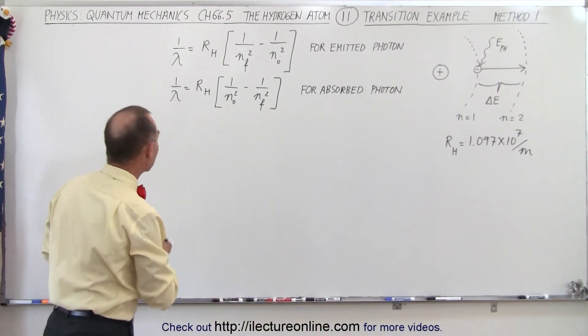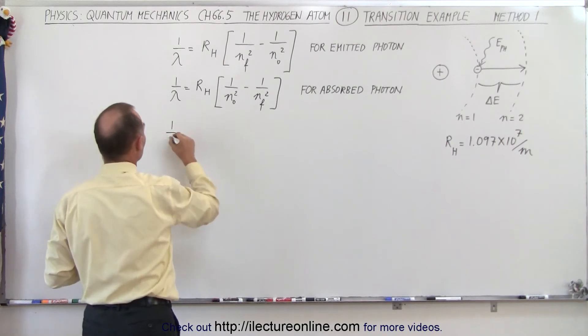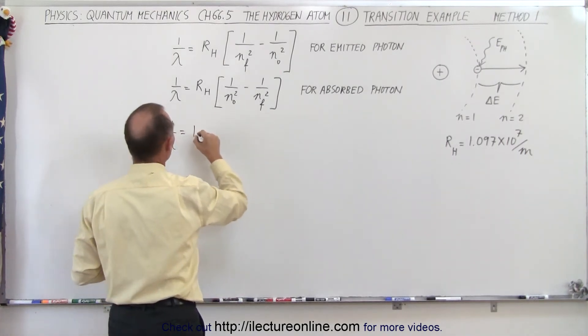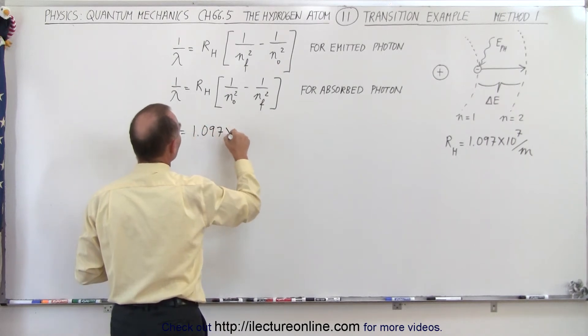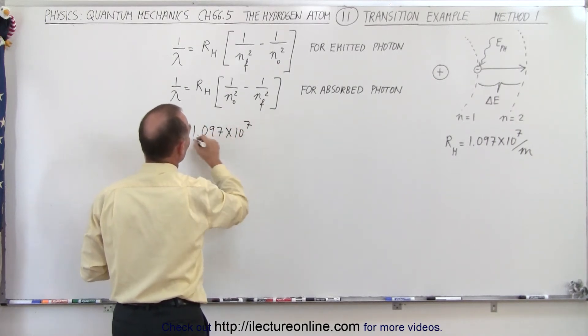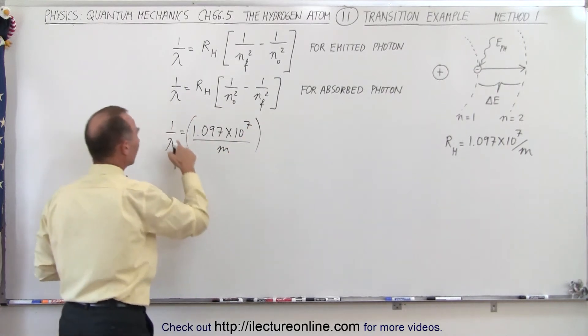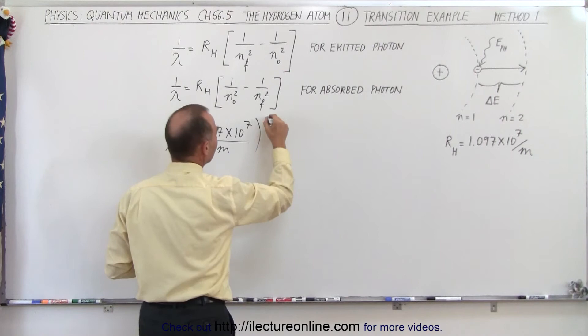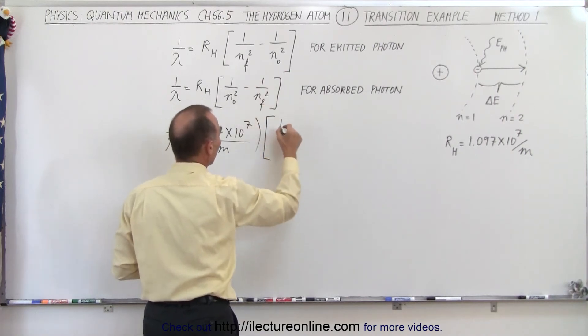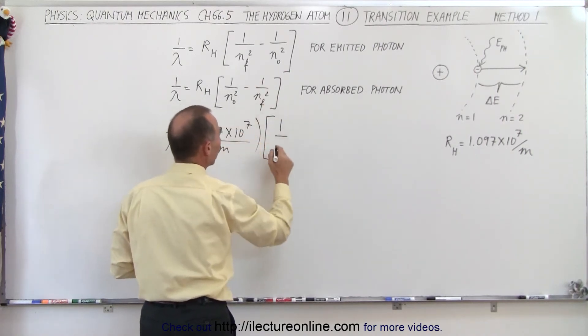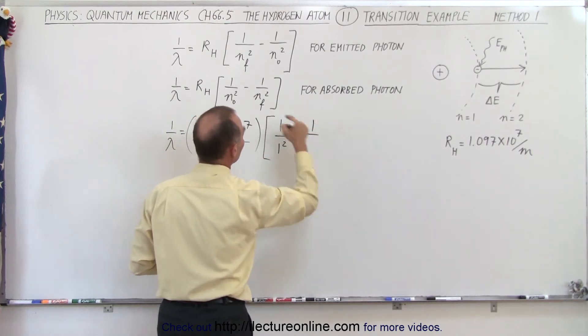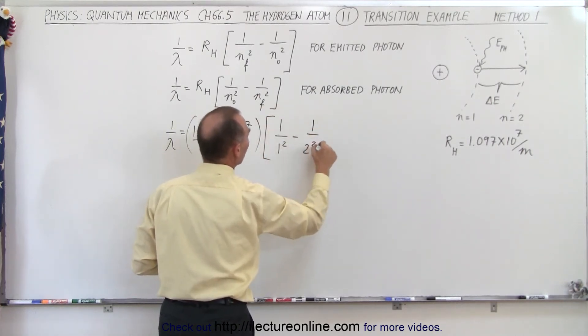Using the equation right here, we can write that 1 over lambda is going to be equal to the Wright-Burk constant which is 1.097 times 10 to the 7th per meter. And notice that since it's 1 over the wavelength, we have 1 over meter in the equation. And then this is simply a constant, 1 over the initial n squared, so that would be 1 over 1 squared, minus 1 over n final which is 2 squared.